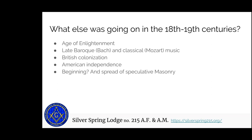To put everything in perspective: in the 18th and 19th century you have the Age of Enlightenment, which we discussed in the liberal arts and sciences and even in the virtues. This was when, kind of like in the Renaissance, thinkers were looking back at some of these previous societies, revisiting some of their great works, and adding a new emphasis on to them.